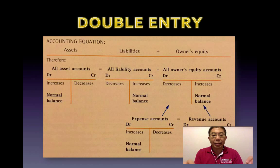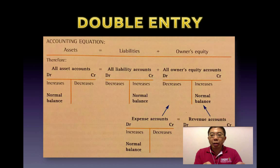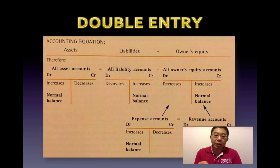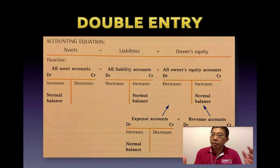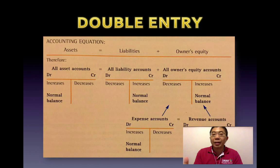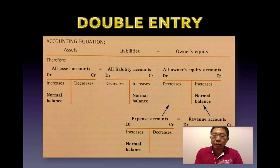The accounting equation represents the resources — which are the assets of a particular business — on the left-hand side. On the right-hand side are the claims or the sources of these resources. There are two parties that would claim them: the owner, and third parties or creditors or liabilities. That equation must always balance because it refers to the same thing from two different sides, and the principle of duality applies because every transaction must have at least two effects on the accounting equation.